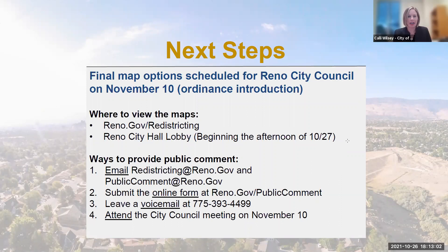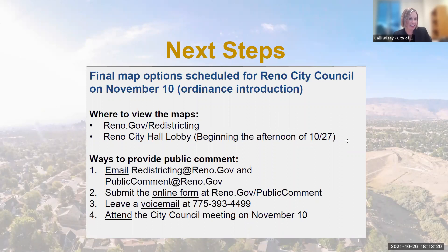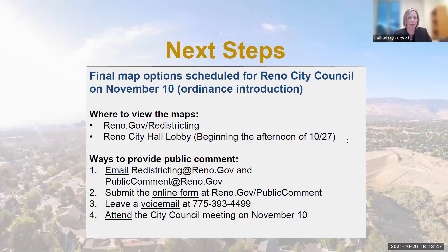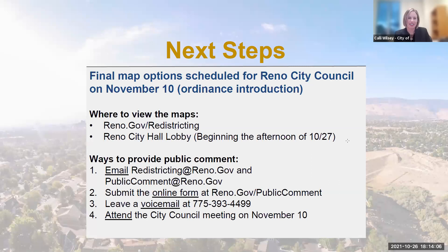Final question: when the final map options are provided to city council, will it be a straight vote to choose one of the maps, or is there still room to discuss what the map lines will be? Response: between now and council, these will be the final maps that go forward. However, on November 10th, council could provide various directions — including requesting changes — or they could select one of these maps as presented. Thank you for the clarification, and thank you for your work on this. The community really appreciates it.